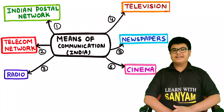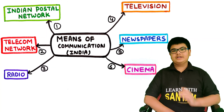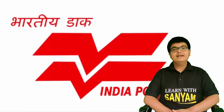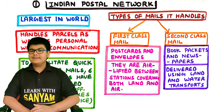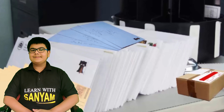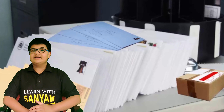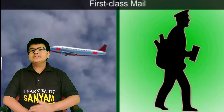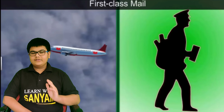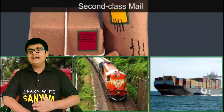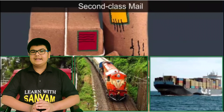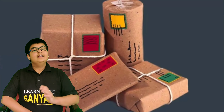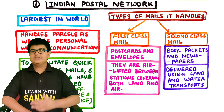Let's discuss the means of communication in our country, India. First, the Indian Postal Network — this is the largest in the world. It handles parcels as well as personal written communication. It handles two types of mails: first class mail and second class mail. First class mail includes postcards and envelopes and is airlifted between stations covering both land and air. Second class mail includes book packets and newspapers and is delivered using land and water transport.